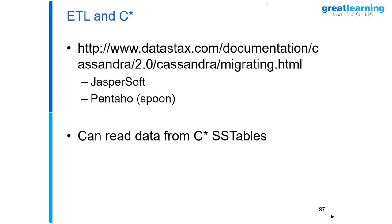ETL and Cassandra does exist, though I'm not too sure about all of it. Jasper and Pentaho are both open source, and I've worked with Spoon in the past. If you use the Cassandra connector, it can start reading from SS tables. SS tables are the Cassandra data files — file one, file two, file three. You can directly start reading from them if you want to do an ETL job.